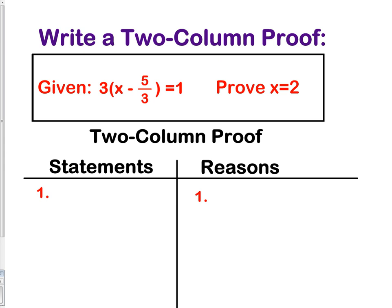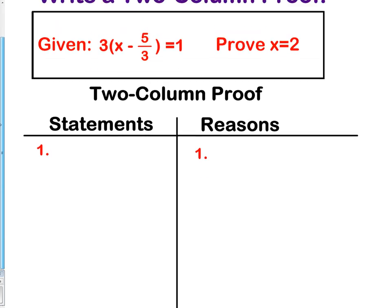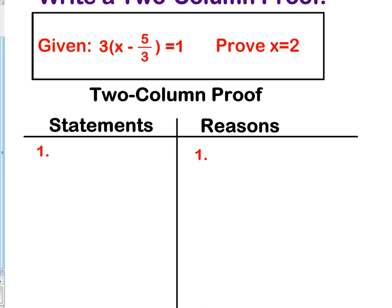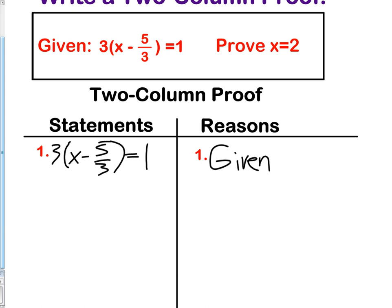Here we go — we're going to write that two-column proof for the question we just did. So what was our first step? Our first step was to write down the given information: 3 times the quantity x minus 5 thirds equals 1. Remember, that is always the first step in all of our proofs. In a two-column proof, you have a column of statements and a column of reasons.